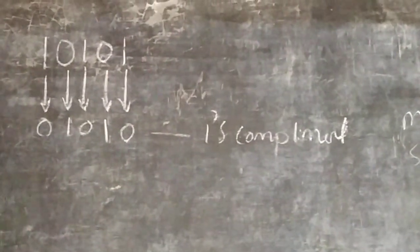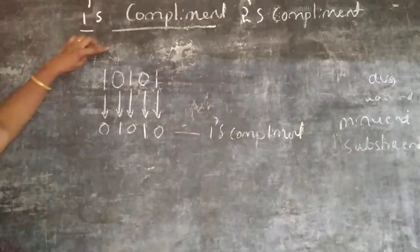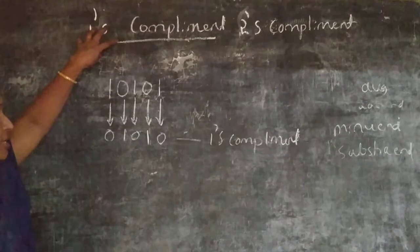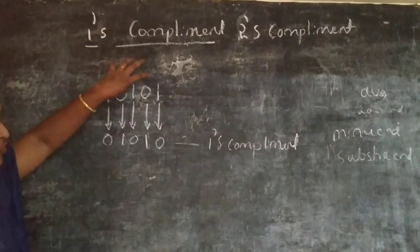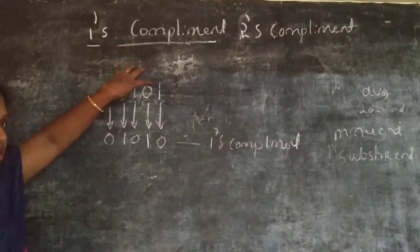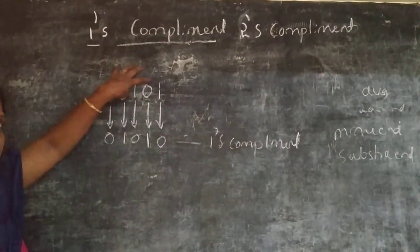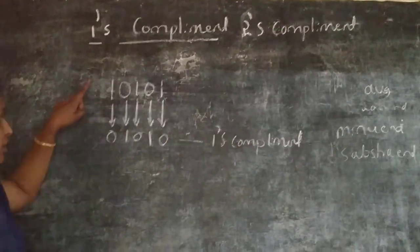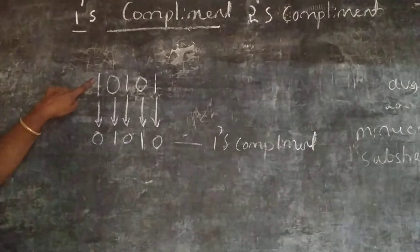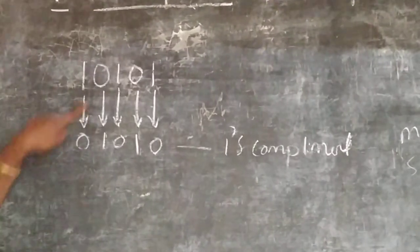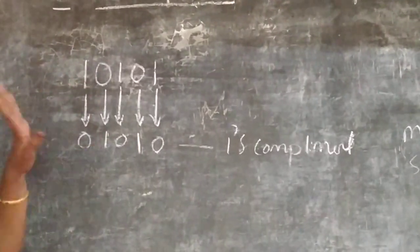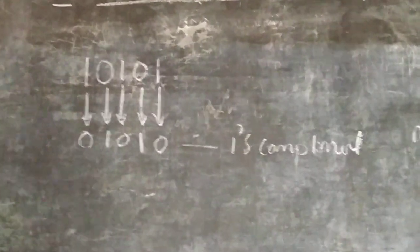To repeat: the 1s Complement of any number is the replacement of 1 with 0 and 0 with 1.